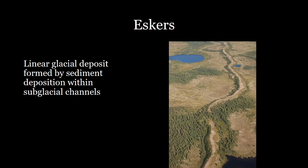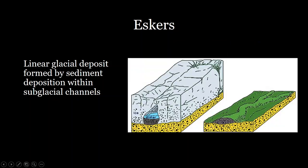Next we have eskers. Eskers are linear glacial deposits formed from sediment depositing within subglacial channels. We talked about subglacial channels and Röthlisberger channels previously. Eskers are the result of those channels after the glacier has retreated. You can imagine a subglacial channel getting plugged and filled with sediment slowly, and then as the glacier retreated, all that was left was this line of sediment — you can see that in this diagram here.